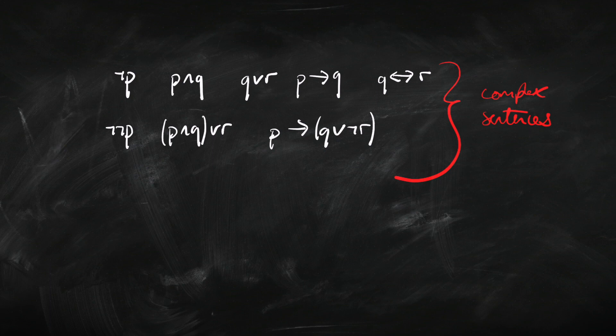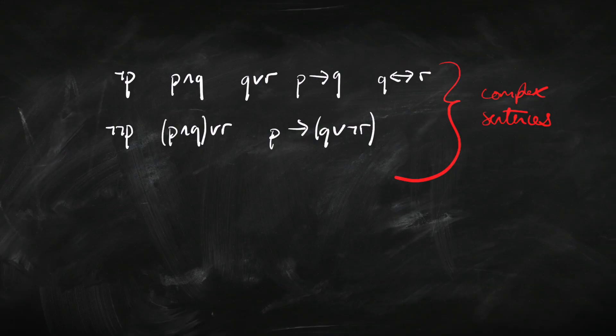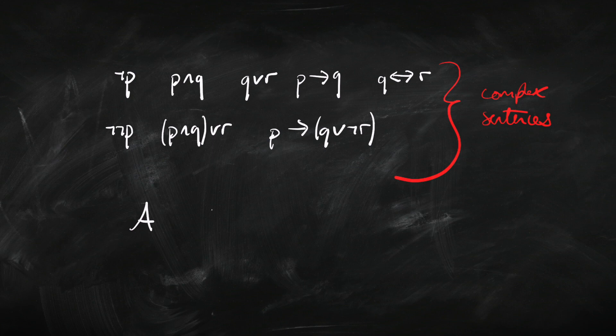Our primitive sentences are just the sentence letters; complex sentences are all the ones built by combining sentence letters with connectives. To give an official definition, I need to introduce a convention. Sometimes I want to describe any arbitrary sentence — not a specific one, but just any old sentence. I'll call those A, B, or C, and if I need more, A1, A2, and so on. The P's and Q's are specific sentence letters; A, B, and C represent any arbitrary sentence.